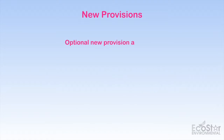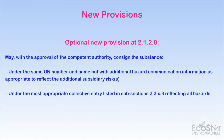Where a consigner has new test data which indicates that a listed substance has additional hazards not identified in the list, it may be transported with competent authority approval, either under the listed entry but with additional hazard communication information, or under the most appropriate collective entry.